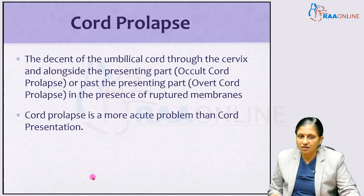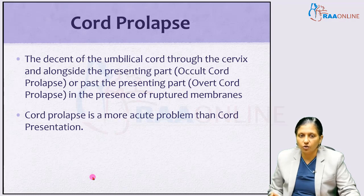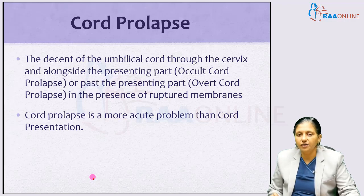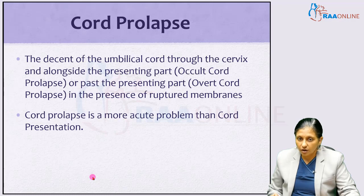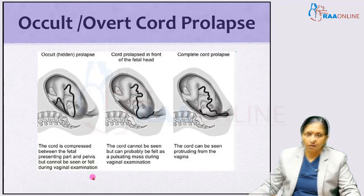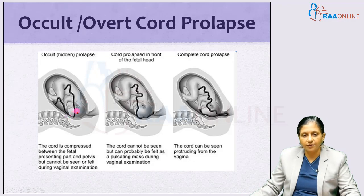The descent of the umbilical cord through the cervix and alongside the presenting part is called occult cord prolapse, and past the presenting part is called overt cord prolapse, in the presence of ruptured membranes. In overt cord prolapse the cord can be seen or felt; in occult cord prolapse it cannot be seen. Cord prolapse is a more acute problem than cord presentation. In hidden prolapse, the cord is compressed between the fetal head and maternal bones but cannot be seen.